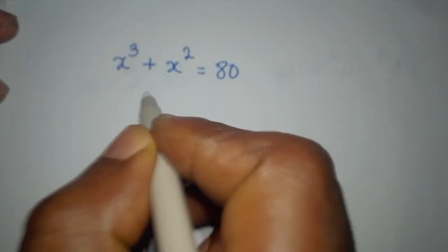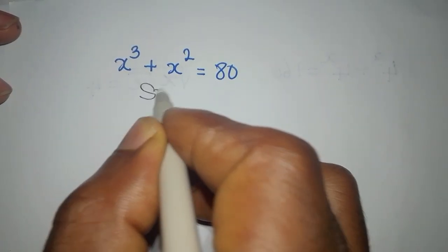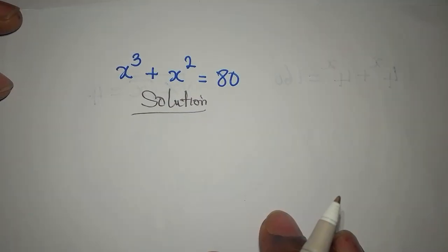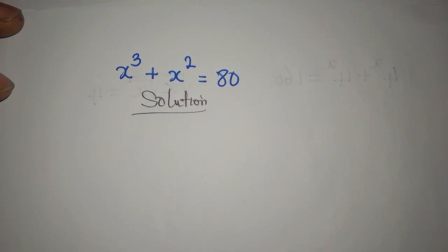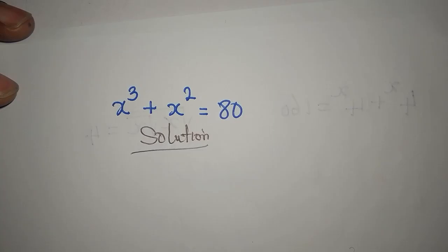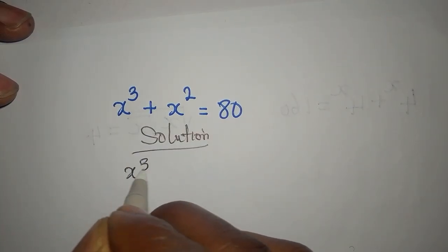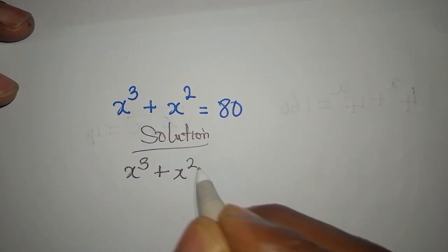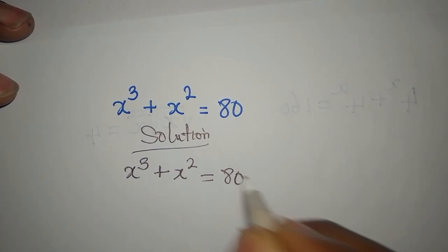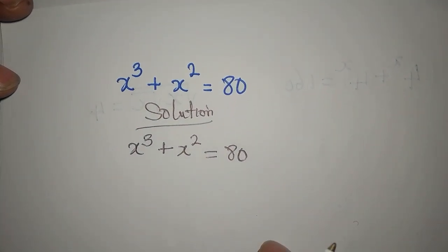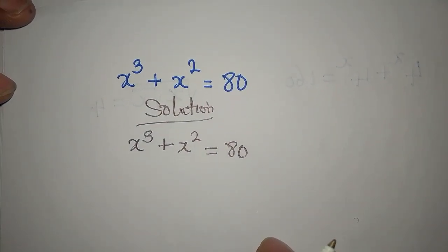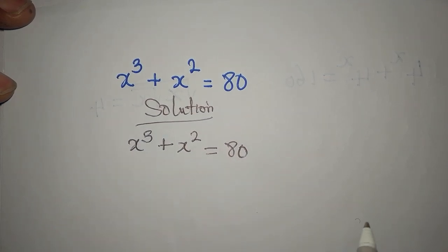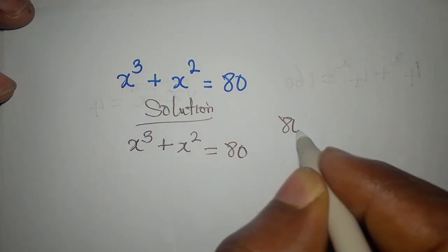Hi everyone, let's provide the solution to this problem. We have x³ + x² = 80. Let's see if 80 can exist in this form.